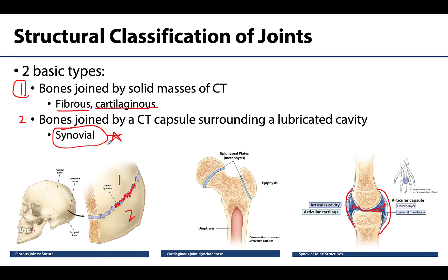Each one of these structural categories — fibrous, cartilaginous, and synovial — will have their own video, so we will talk in more detail there.